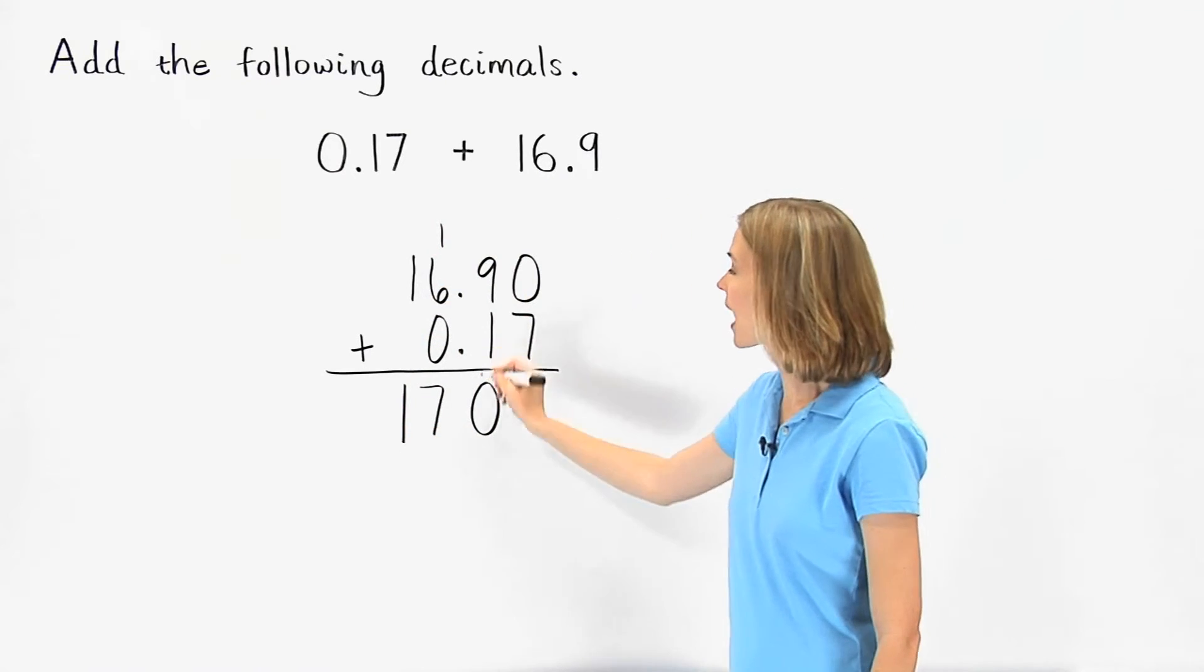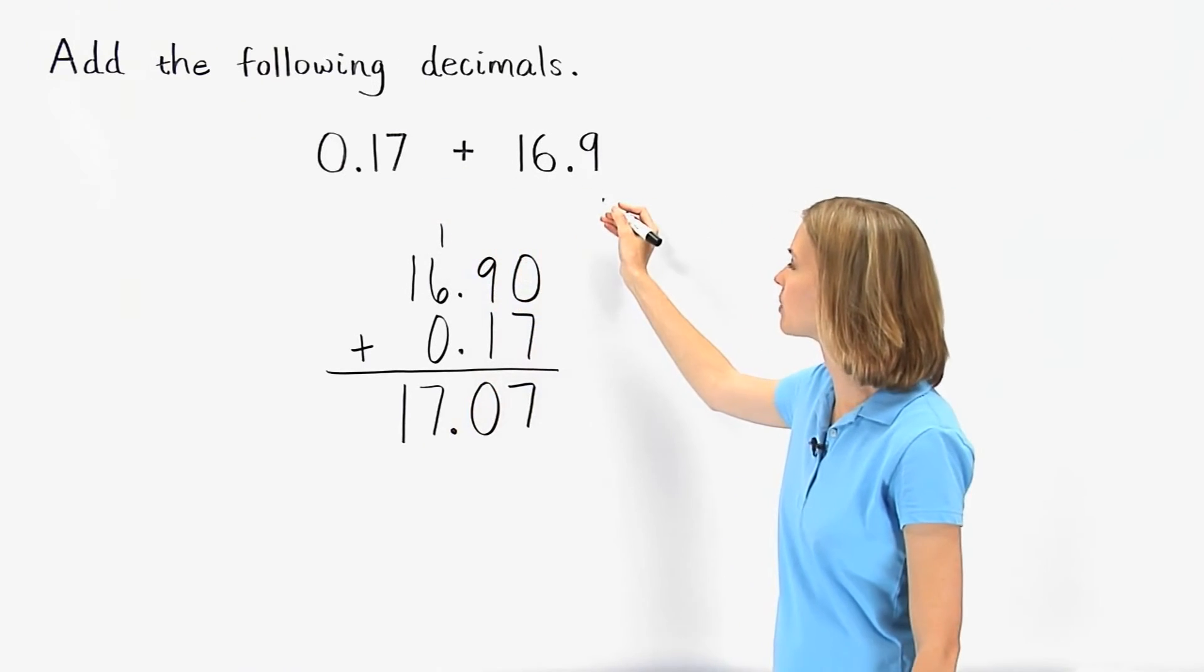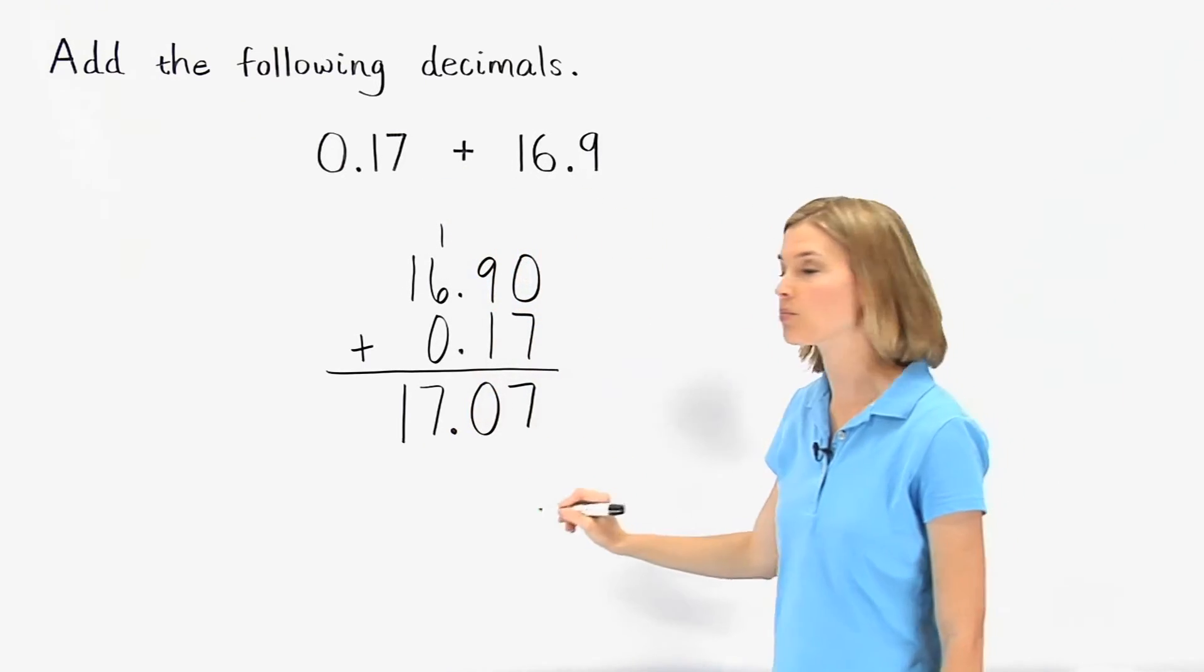Finally, we bring down the decimal. So 0.17 plus 16.9 is 17.07.